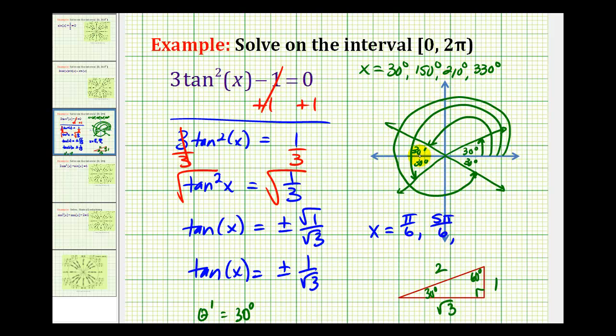210 degrees will be π plus π over 6, that'll be 7π over 6. And then 330 degrees is 2π minus π over 6, which will be 11π over 6. So these are the solutions to our trig equation on the given interval.